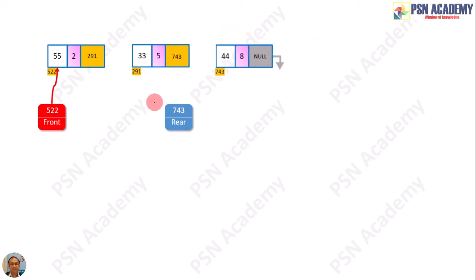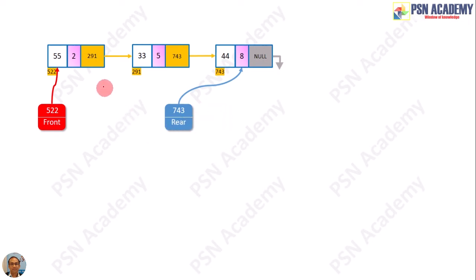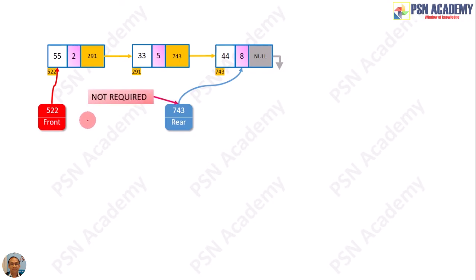We rearrange so that it looks nicer. In the case of a linked list, the rear pointer is not required at all, because we can locate any node in the list when we have the start pointer or the front pointer pointing to the first node.